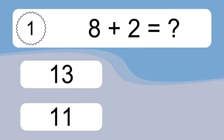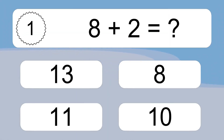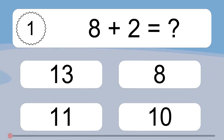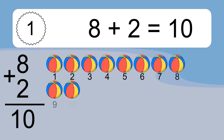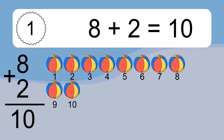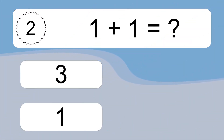8 plus 2 equals what? 8 plus 2 equals 10. Let's count it: 1, 2, 3, 4, 5, 6, 7, 8, 9, 10.